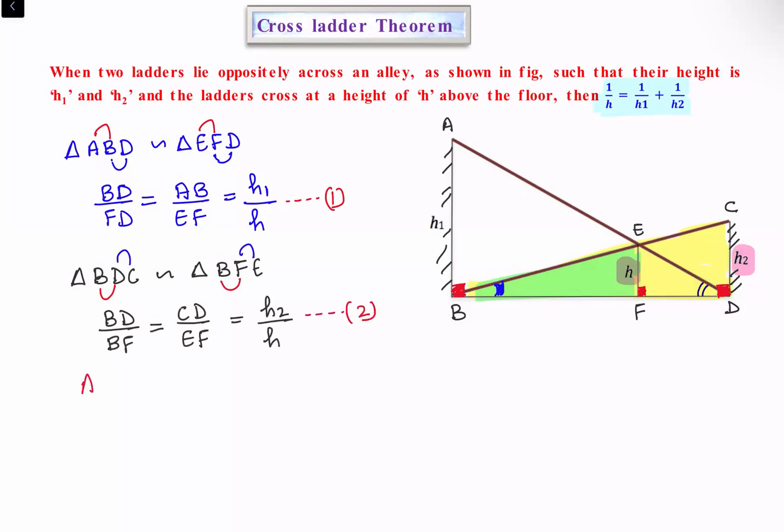If we add observations one and two, on the left side we're adding BD/FD and BD/BF. So BD/FD + BD/BF equals h1/h + h2/h.